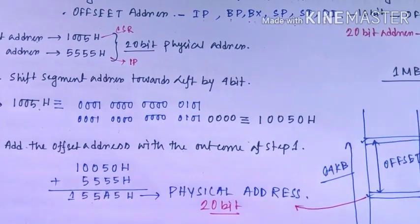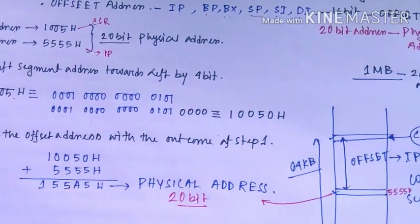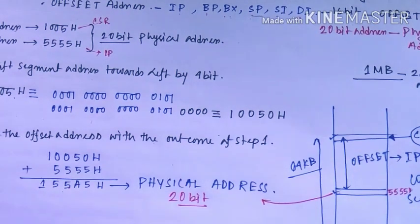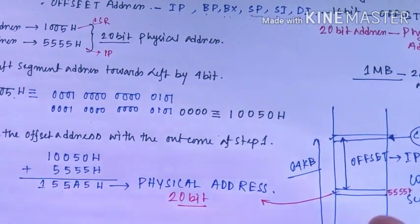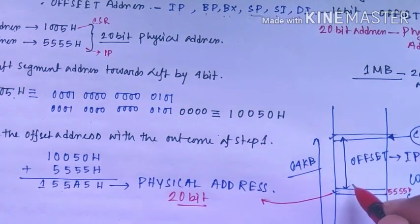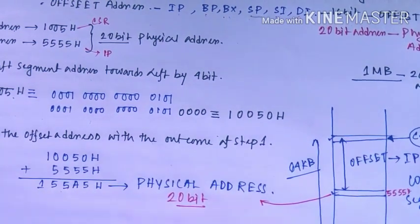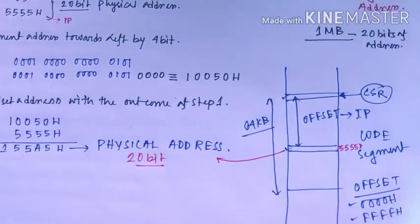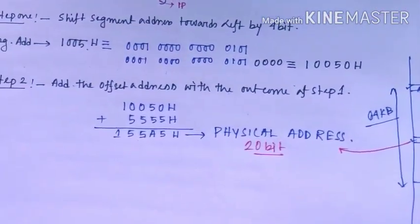So remember: in the 8086, whenever we access a memory location, each memory register actually has two different addresses — one is its offset address and another is its physical address. Hopefully this is easy to understand. Thank you.